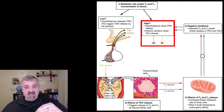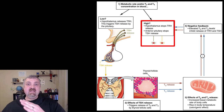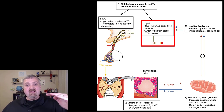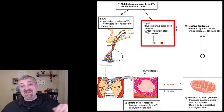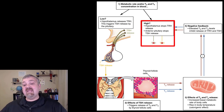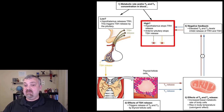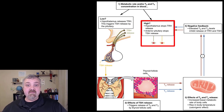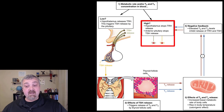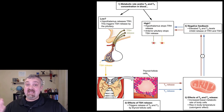If the level starts to dip again, you're going to see it go up. If it goes too high, you're going to see it shut down. That's negative feedback, trying to maintain a stable amount of thyroid hormone. If there was already too much thyroid hormone, the system would shut off and allow that thyroid hormone to be used up. That's a really good example of how negative feedback works.